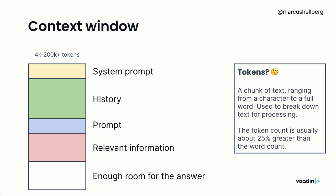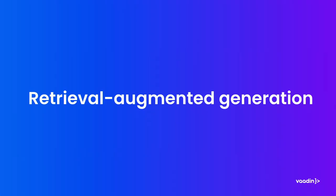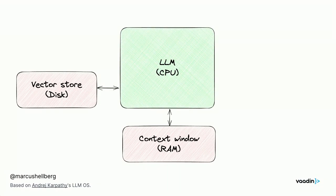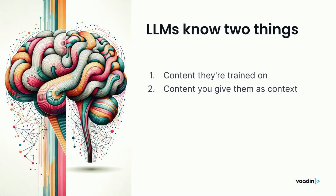It's still worth noting that most APIs charge by the amount of tokens you use, so you have a built-in incentive not to use more tokens than you need. Now, if we want to add persistent storage and teach the model about our context, it's good to understand what large language models know and don't know — roughly, what they've been trained on and what you feed them in the context window.